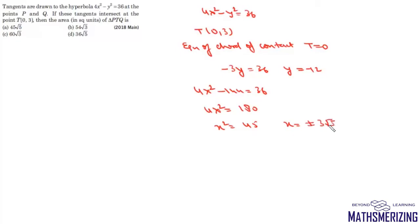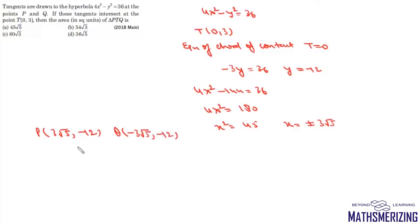The value of x is plus or minus 3√5. So we can write coordinates of P and Q: P is (3√5, −12), Q is (−3√5, −12), and T is (0, 3).